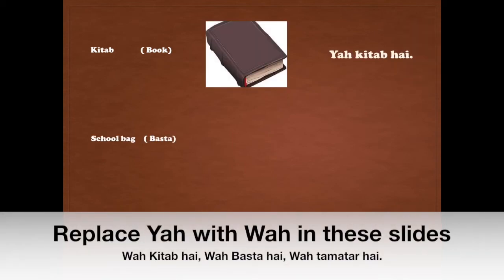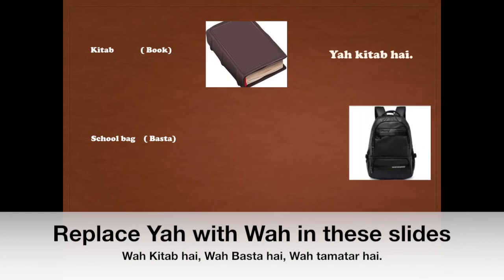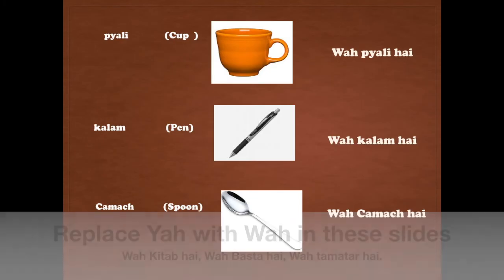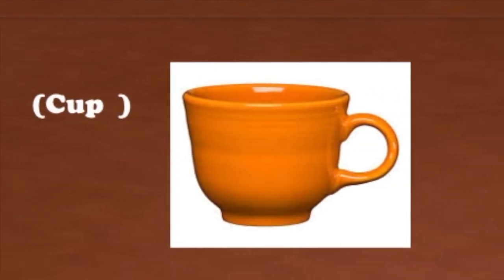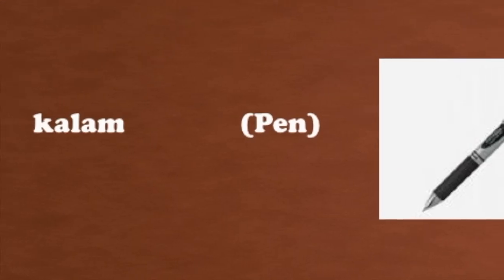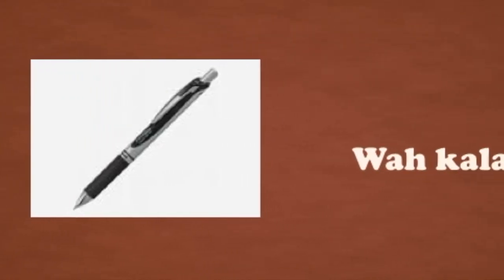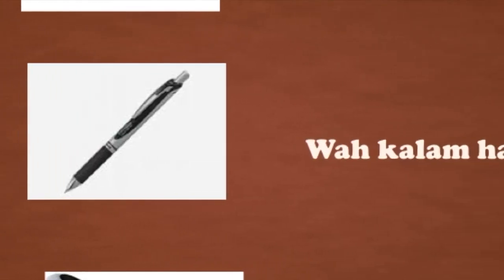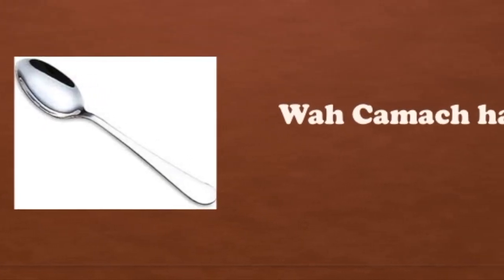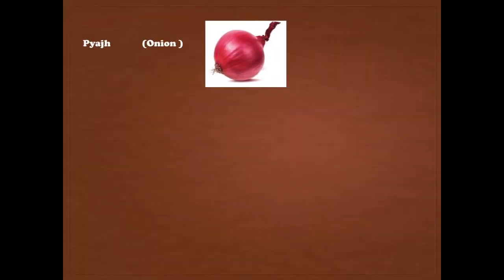Continuing with vaha sentences: vaha basta hai means 'that is a school bag.' Vaha tamaatar hai means 'that is a tomato.' Pyali means cup: vaha pyali hai, meaning 'that is a cup.' Kalam means pen: vaha kalam hai, meaning 'that is a pen.' Chammach means spoon: vaha chammach hai, meaning 'that is a spoon.' Pyaj means onion: vaha pyaj hai, meaning 'that is an onion.'